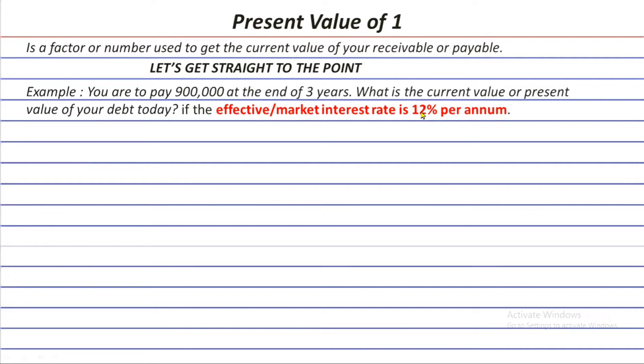Let's go back to the problem. Since we already have the three needed details here in this sample problem, the future payment is here. It's 900,000. The second is we have the number of periods already, which is three years. And the third one is the effective interest rate of 12%. Since we have that, then it's time to solve.